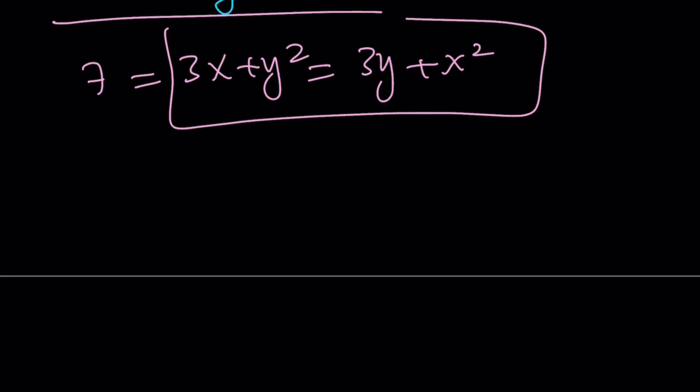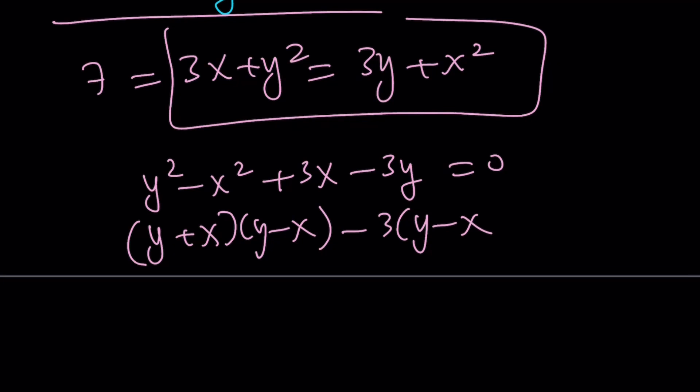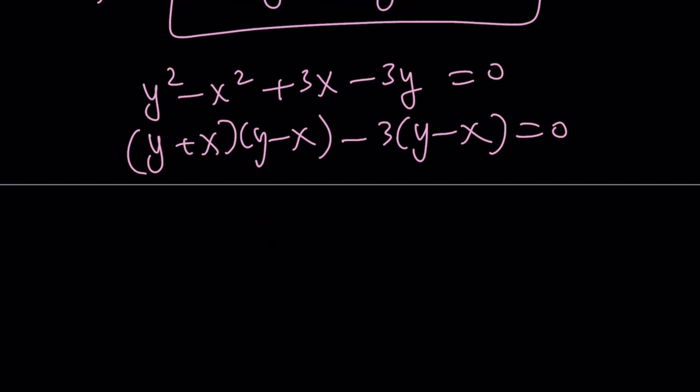Now what am I going to do? Put everything on the same side. I don't know. Left-hand side is okay. y squared minus x squared plus 3x minus 3y is equal to 0. This is y plus x times y minus x. This is negative 3 times y minus x. Yay! I got a common factor. Of course you should. y minus x if you do it correctly. Then you get y plus x minus 3.